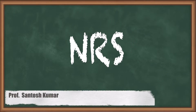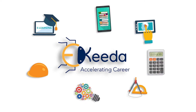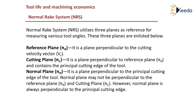Welcome back to Machining Sciences and Tool Design. We are discussing Module 5, the design of single point cutting tools. In this video we will discuss the Normal Rake System (NRS). Compared to ORS, NRS requires three mutually placed reference planes for measuring tool angles, but unlike ORS these planes are not mutually perpendicular. These planes are used as reference for measuring various tool angles like normal rake angle and inclination angle.